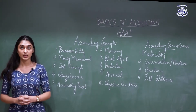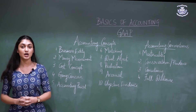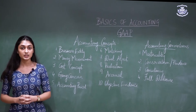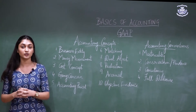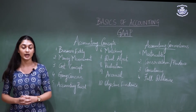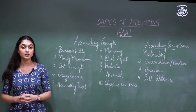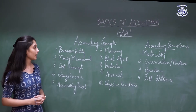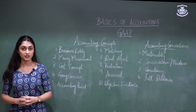The accounting period concept states that the books of accounts are to be maintained for a period of one year. This period could start from the first of January and end on the 31st of December, or from the first of April and end on the 31st of March. The profit and loss is ascertained at the end of this period.